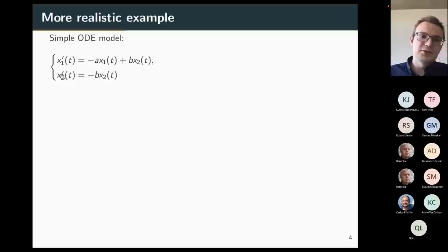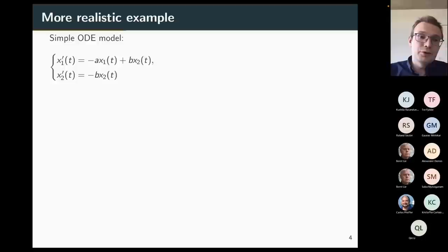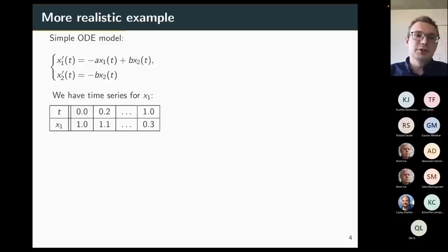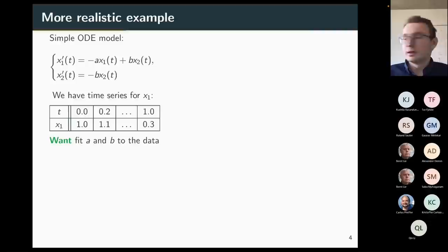This is a system of two ODEs — a linear ODE system. You can think of it as a model of two compartments, first and second. There is outflow from the second compartment going to the first, and outflow from the first compartment going to outer space. For this model there's no clear symmetry; the first and second compartments have different roles. We assume we have time series for X1. I took some parameter values and initial conditions, generated this data — so this is actual data — and I'd like to fit A and B to it, including the initial condition for X2.